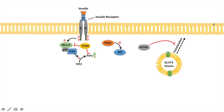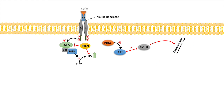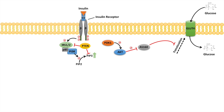Once you have insulin stimulation and AKT is phosphorylated and activated by PDK1, AKT will phosphorylate and inactivate AS160. This allows translocation to occur, and GLUT4 — glucose transporter 4 — becomes embedded in the cellular membrane. Once GLUT4 is in the membrane, glucose can be transported inside the cell and undergo glycolysis.